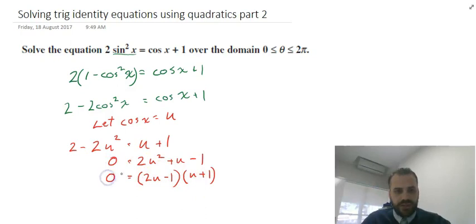Null factor theorem: because 0 = (2u - 1)(u + 1), therefore 2u - 1 = 0 or u + 1 = 0. That means u = 1/2 or u = -1. So I've got two answers here: u = 1/2, u = -1.